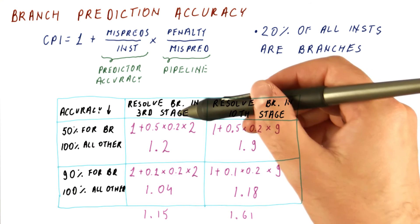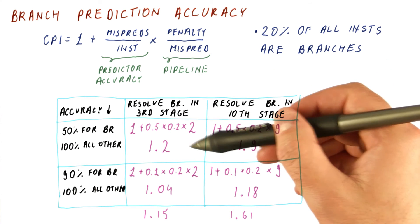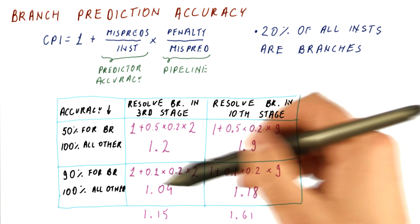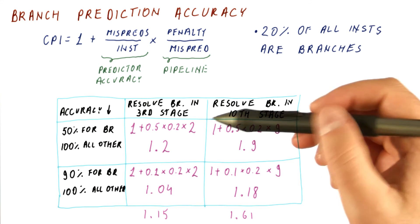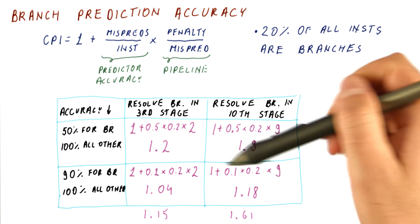As you can see, the deeper the pipeline, the more dependent it is on having a good predictor for good performance. And that is really why research in branch predictors continues to this day.